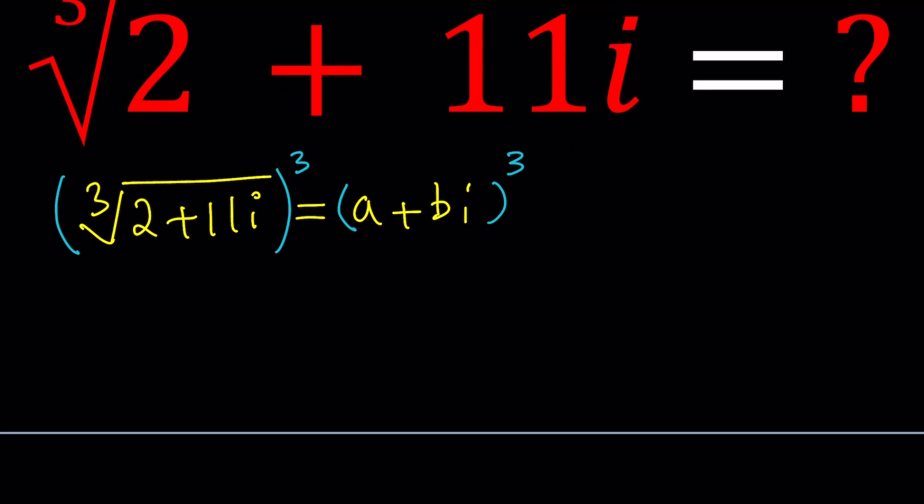So if you cube both sides, 2 plus 11i - let me write the A plus Bi cubed on the left-hand side, so kind of switch sides here. If you cube A plus Bi, you get A cubed, and then minus B cubed i, plus 3ABi - an identity that I use for the cube of a sum or a cube of a difference. 3ABi, and then this is multiplied by A plus Bi, and this is supposed to equal 2 plus 11i.